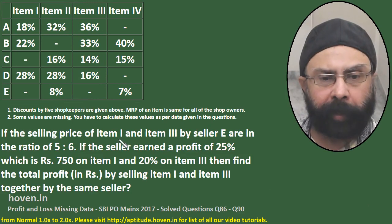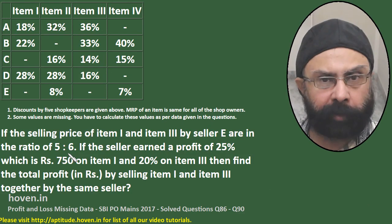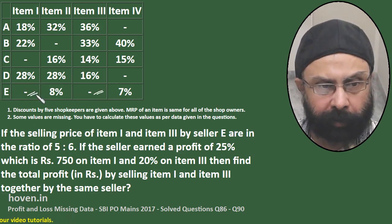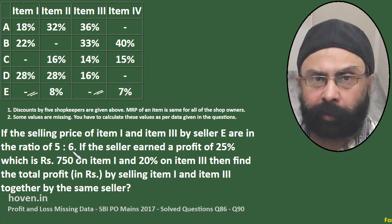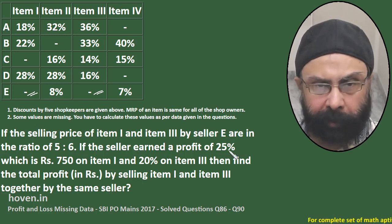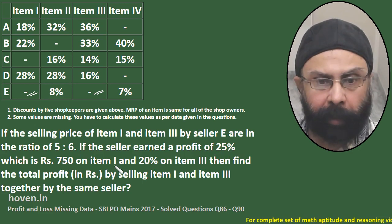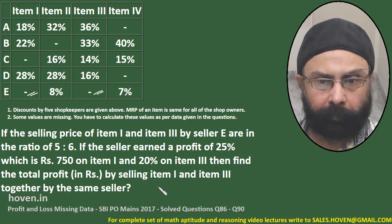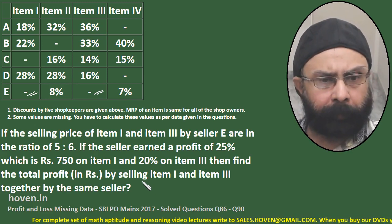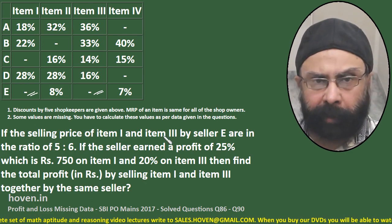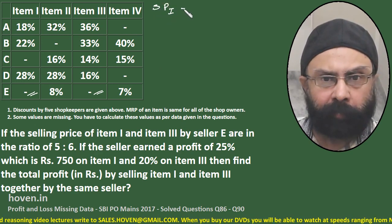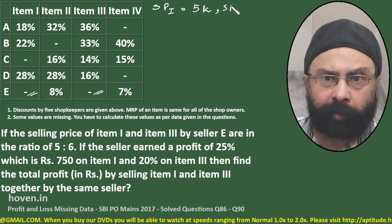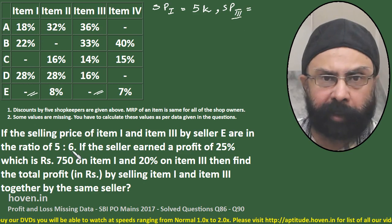If the selling price of item 1 and item 3 by seller E are in the ratio 5 is to 6 — and for seller E both discounts are not known to us — so let us write selling price of item 1 as 5k and selling price of item 3 as 6k, since the ratio is given.